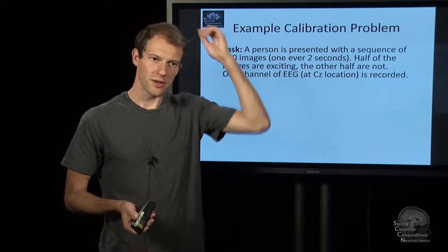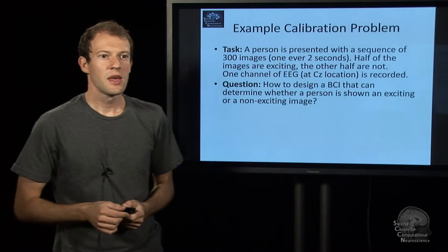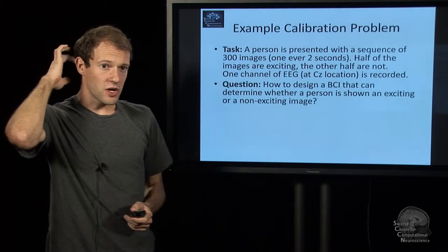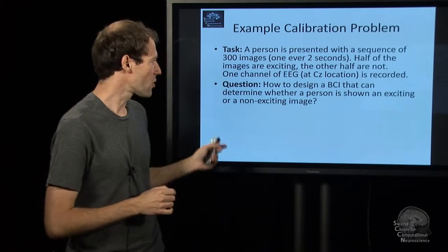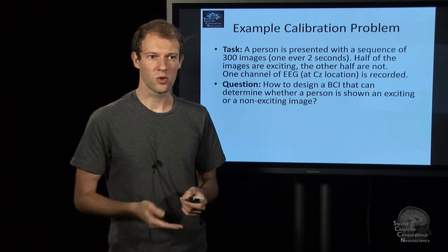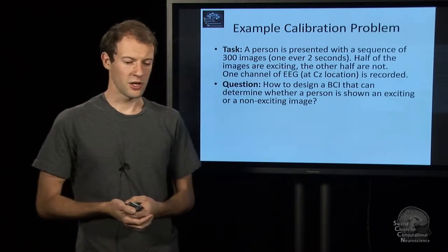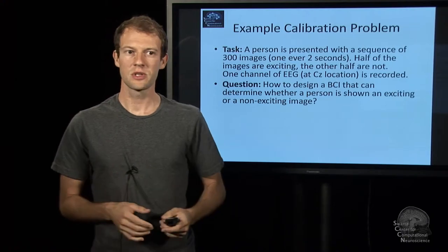We're recording one channel of EEG at the CZ location. The question is how can we design a brain computer interface that can determine for a given moment whether the person is being shown an exciting or a non-exciting image. You would answer that question based on a chunk of EEG around the time when the person sees that image.